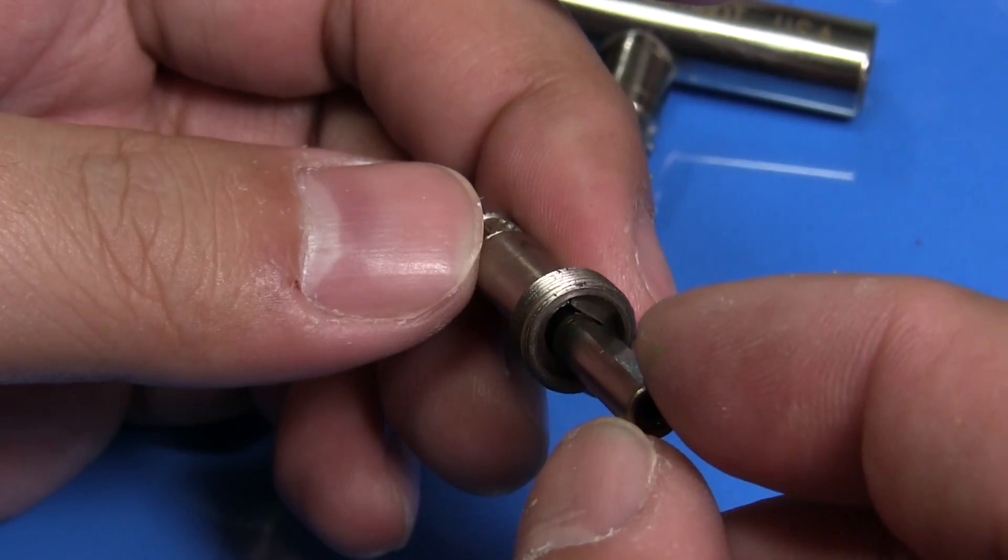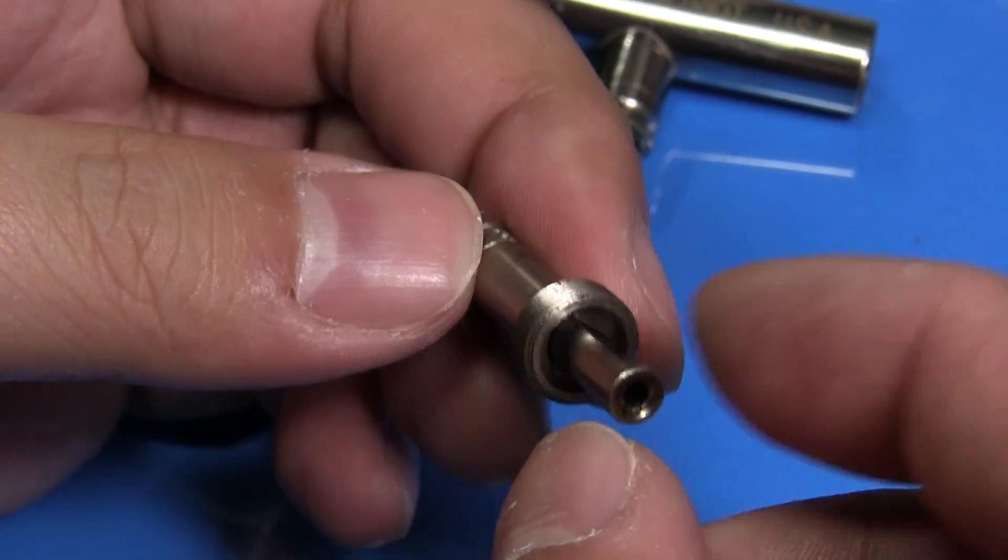Now insert the tube shank making sure the flat parts line up. It should be able to move in and out.